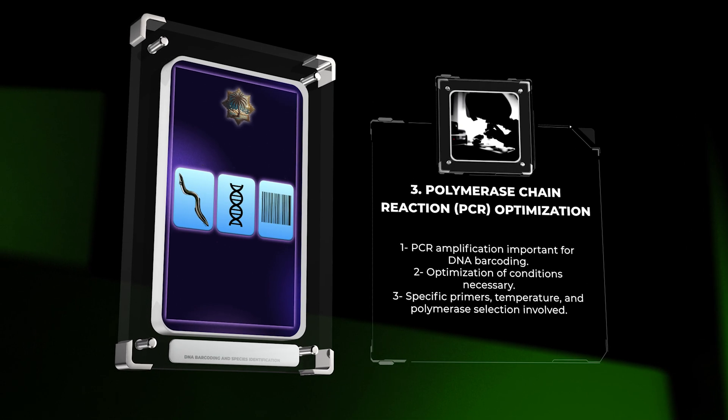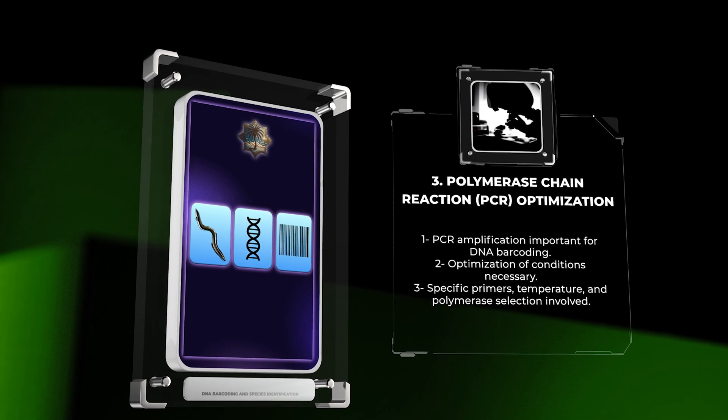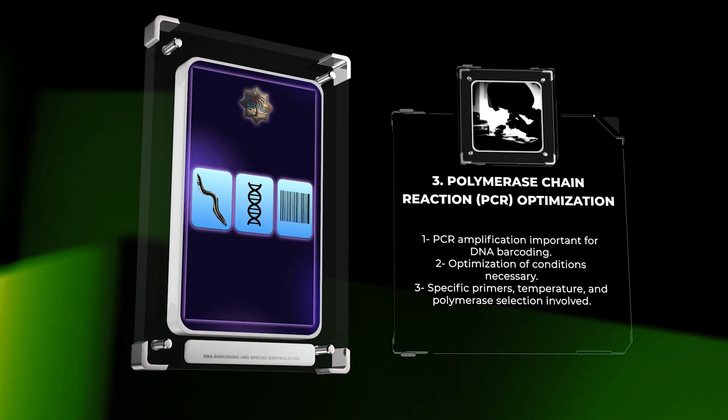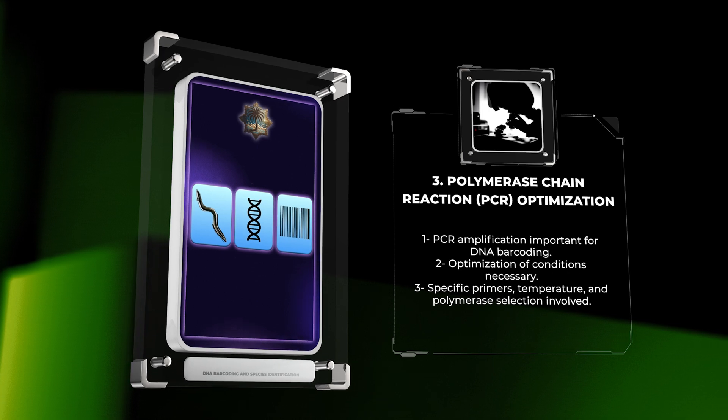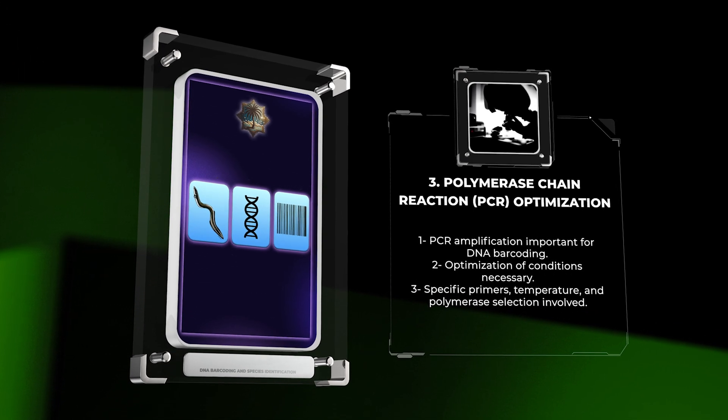PCR amplification is important for DNA barcoding. To make it work well, we need to optimize the conditions. This involves designing specific primers, finding the right temperature, and choosing a polymerase that can correct mistakes during amplification.